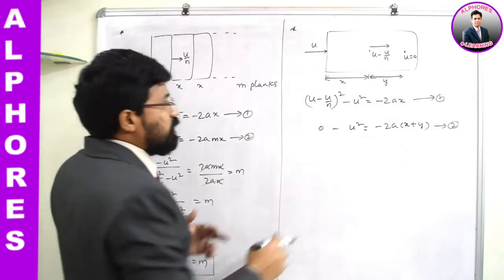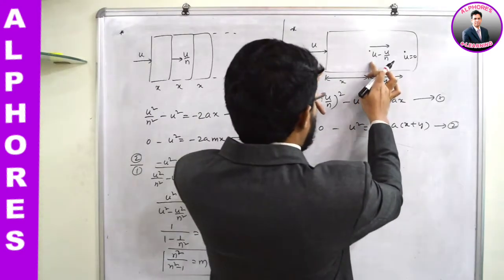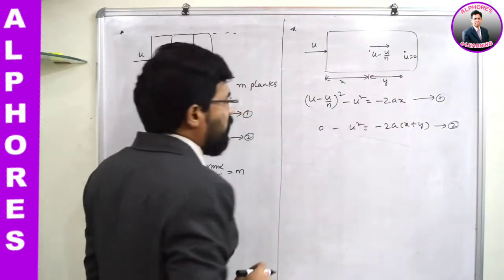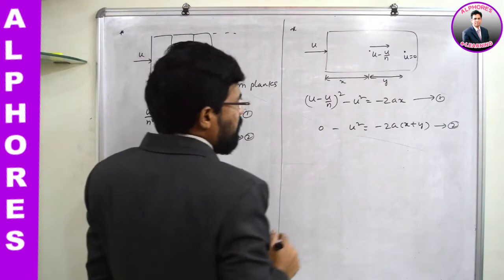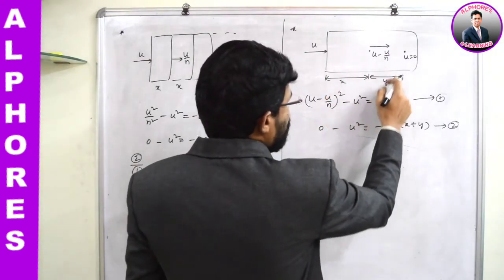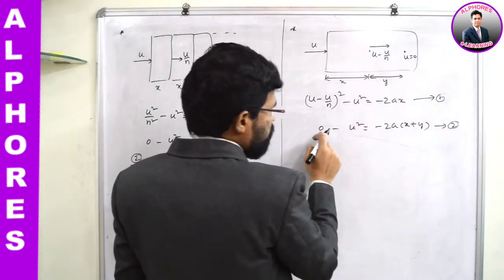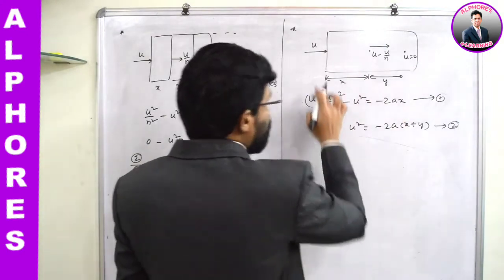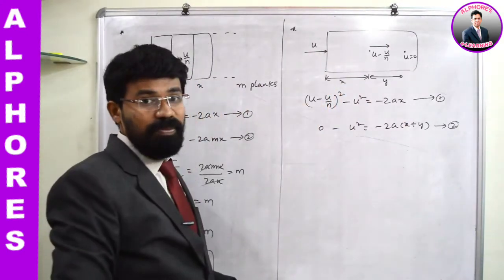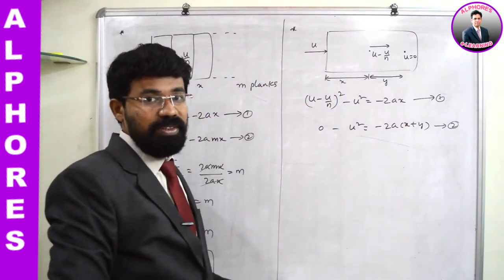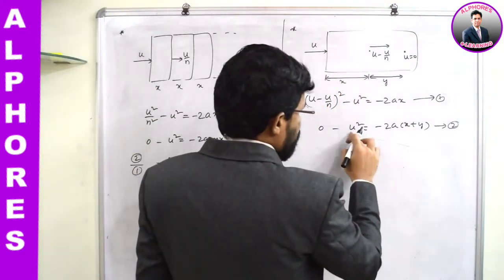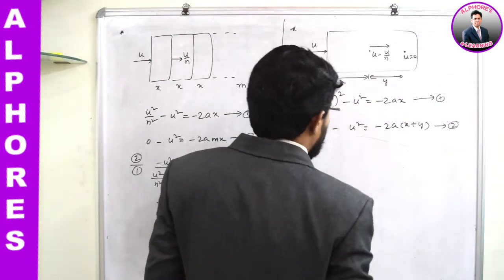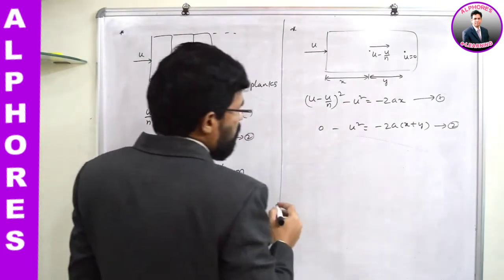Here I have written two equations — equation 1 corresponding to distance x, and equation 2 corresponding to distance x + y. After traveling a total distance x + y the bullet comes to rest. So u² = -2a(x + y), or equivalently, u² = 2a(x + y).